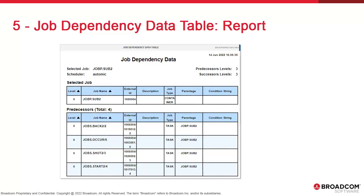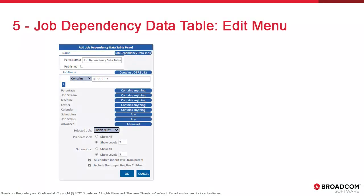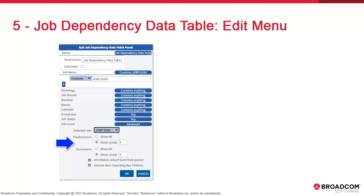It shows the level, which is useful for multi-layered embedded processes, the external ID in the scheduler, the job type — task, container, and so forth — and various other types of information that will vary from one scheduler to the next. In the edit menu, since we can only select one job, we enter a text string matching the job of interest in the job name field, which produces a list of possible options in the select job dropdown. The option 'all children inherit level from parents' shows every single upstream dependency even if they're obvious, meaning all upstream dependencies are displayed all the way to the top container, which could make for a lengthy report. By unchecking this feature, you simplify and streamline the outputs. The same goes for non-impacting box children — if the selected job has children which are containers with no impact on the job, you can exclude them. Finally, you can select the number of parentage layers you need.